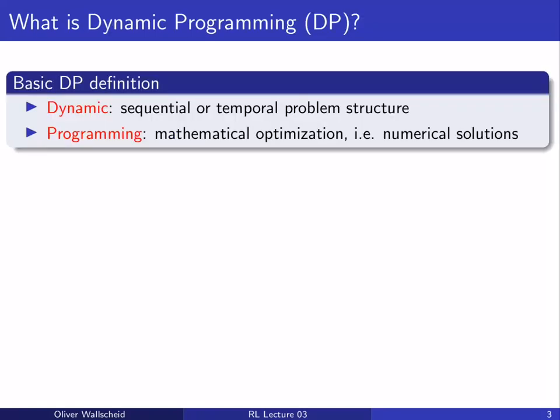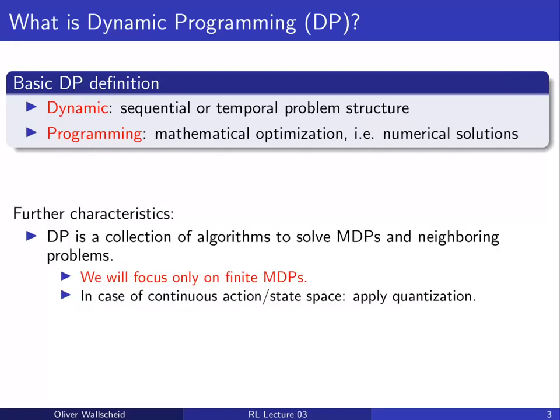So what is dynamic programming, or DP? We can distinguish its two terms: dynamic and programming. Dynamic addresses any problem with a sequential or temporal characteristic, and programming is meant in the sense of mathematical optimization — for example, numerical solutions by numerical solvers. Dynamic programming in general is a large class of solution approaches which can be applied to MDP problems but also to many other neighboring problems.